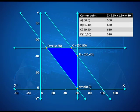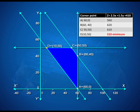The corner point method requires evaluating the objective function Z = 2.5x + 1.5y + 410 at each corner point. We have four corner points A, B, C, and D with their coordinates listed. Calculating Z at all four points, the minimum transportation cost is ₹510, occurring at point D with coordinates (10, 50).